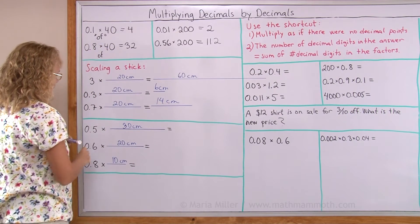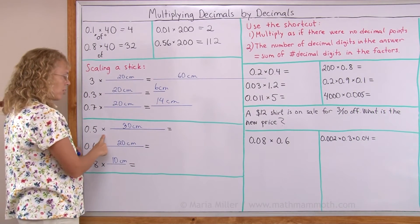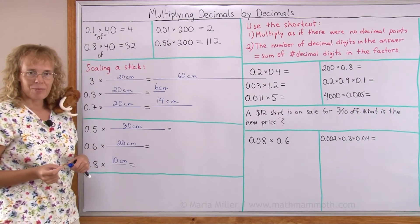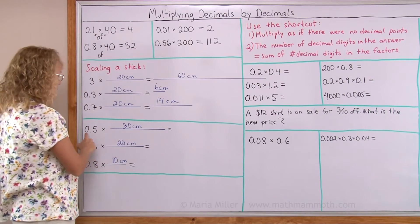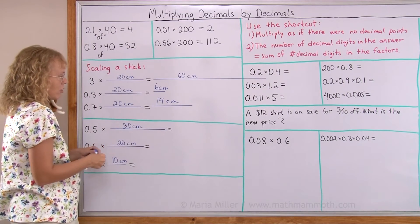Let's do a few more of these. Let's say you have 5 tenths of 30 centimeters. Now it just so happens 5 tenths is exactly half, right? So this is half of 30 centimeters or 15 centimeters.